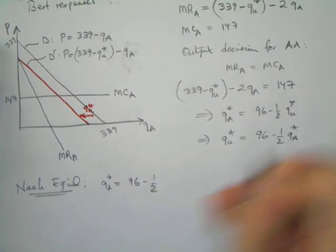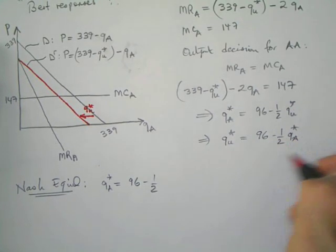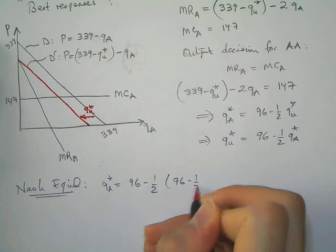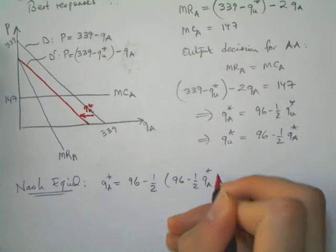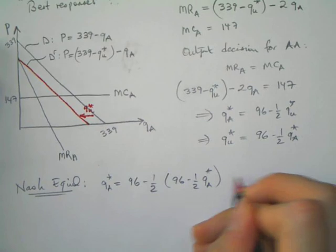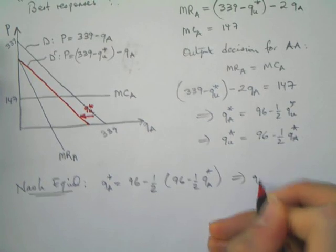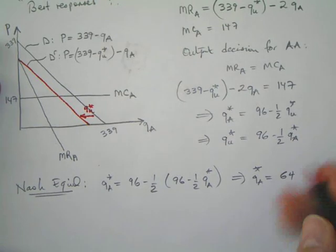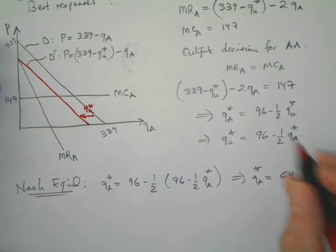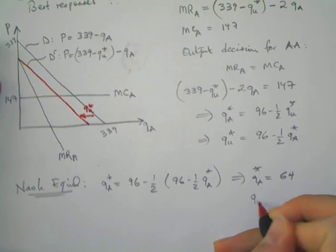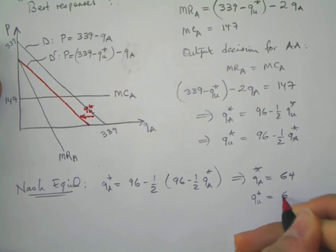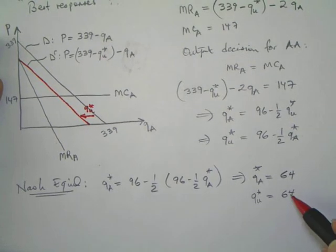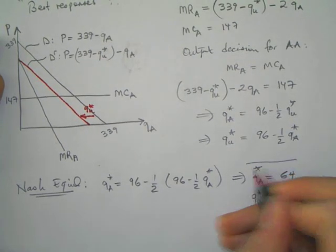Now finding the Nash equilibrium is fairly simple. The Nash equilibrium can be found by simultaneously solving this system. Let's take the first one: QA star equals 96 minus one half, and we can replace QU star in the first equation with 96 minus one half QA star. Working the algebra, QA star equals 64, and QU star equals 64 as well.